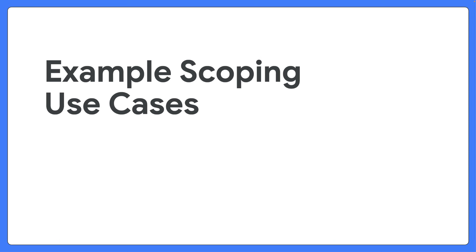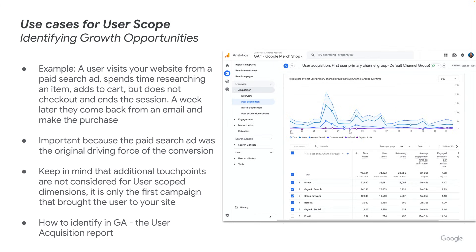Now let's dig in on some example use cases of scoping and how you actually find these reports in the Google Analytics user interface. For user scoping, these are really impactful to identify growth opportunities. For example, a user visits your website from a paid search ad, spends time researching an item, adds it to their cart, but doesn't check out and the session ends. A week later, they come back from an email and make the purchase. This is important because the paid search ad was the original driving force of this conversion. Keep in mind that additional touch points are not considered for user scoped dimensions — only the first campaign that brought the user to your site. To identify user scoped channels, you would go to the user acquisition report.